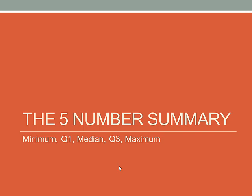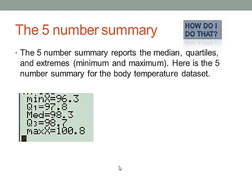The five-number summary is the minimum, Q1, the median, Q3, and the maximum. We've already done this, right? We just didn't call it the five-number summary. It reports the median, quartiles, and extremes. Here's the five-number summary for the body temperature dataset that we've looked at ad nauseum.